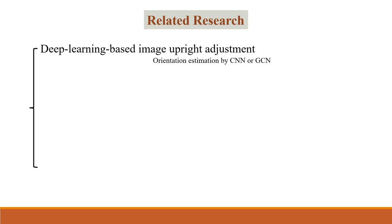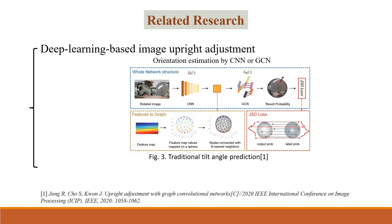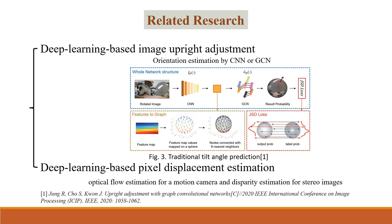Before introducing our approach, let's take a brief look at the related research in this field. As the figure shows, previous image adjustment methods primarily rely on CNN or GCN to estimate tilt angles. Pixel displacement estimation in deep learning typically involves optical flow estimation for moving cameras and disparity estimation for stereo images. In this work, we depart from conventional tilt angle estimation and instead focus on estimating pixel displacement in panoramic images to achieve image adjustment.